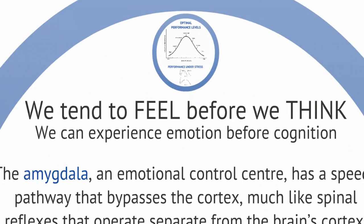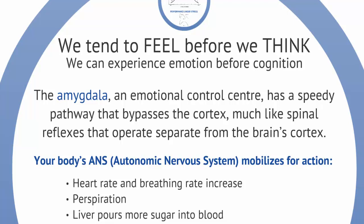This aroused physical state can be experienced as one emotion or another and must be cognitively labeled and interpreted. Our emotional reactions are faster than our thoughts, so we tend to feel before we think — which is why you should always pause before you send that angry email. Research on neurological processes shows how we can experience emotion before cognition. The amygdala, our emotional control center for anger and strong emotions, has a very speedy pathway that bypasses the cortex, sort of like spinal reflexes. One such pathway runs from the eye or the ear to the amygdala.